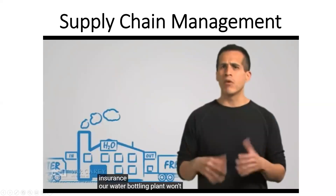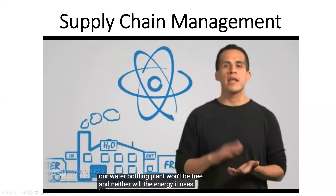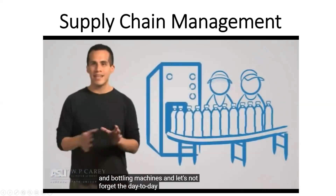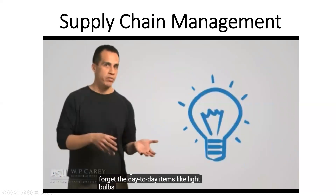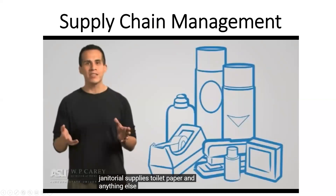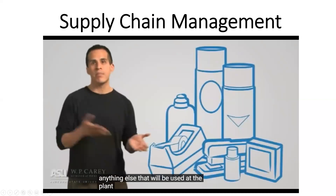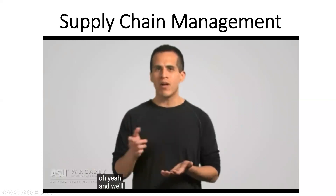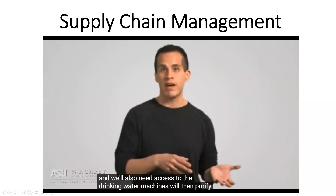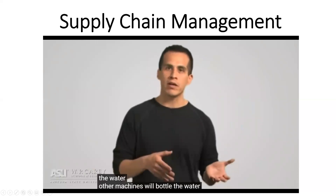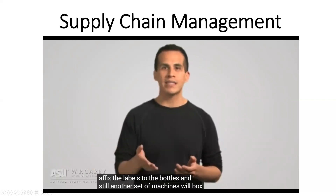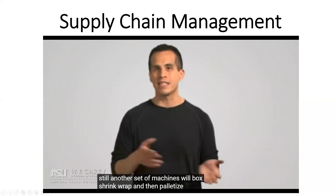Our water bottling plant won't be free, and neither will the energy it uses. In the bottling plant, we'll have employees and bottling machines, as well as day-to-day items like light bulbs, garbage bags, machine parts, janitorial supplies, and anything else used by employees. We'll also need access to drinking water. Machines will purify the water; other machines will bottle the water and affix the labels; and still another set of machines will box, shrink wrap, and palletize the bottles.